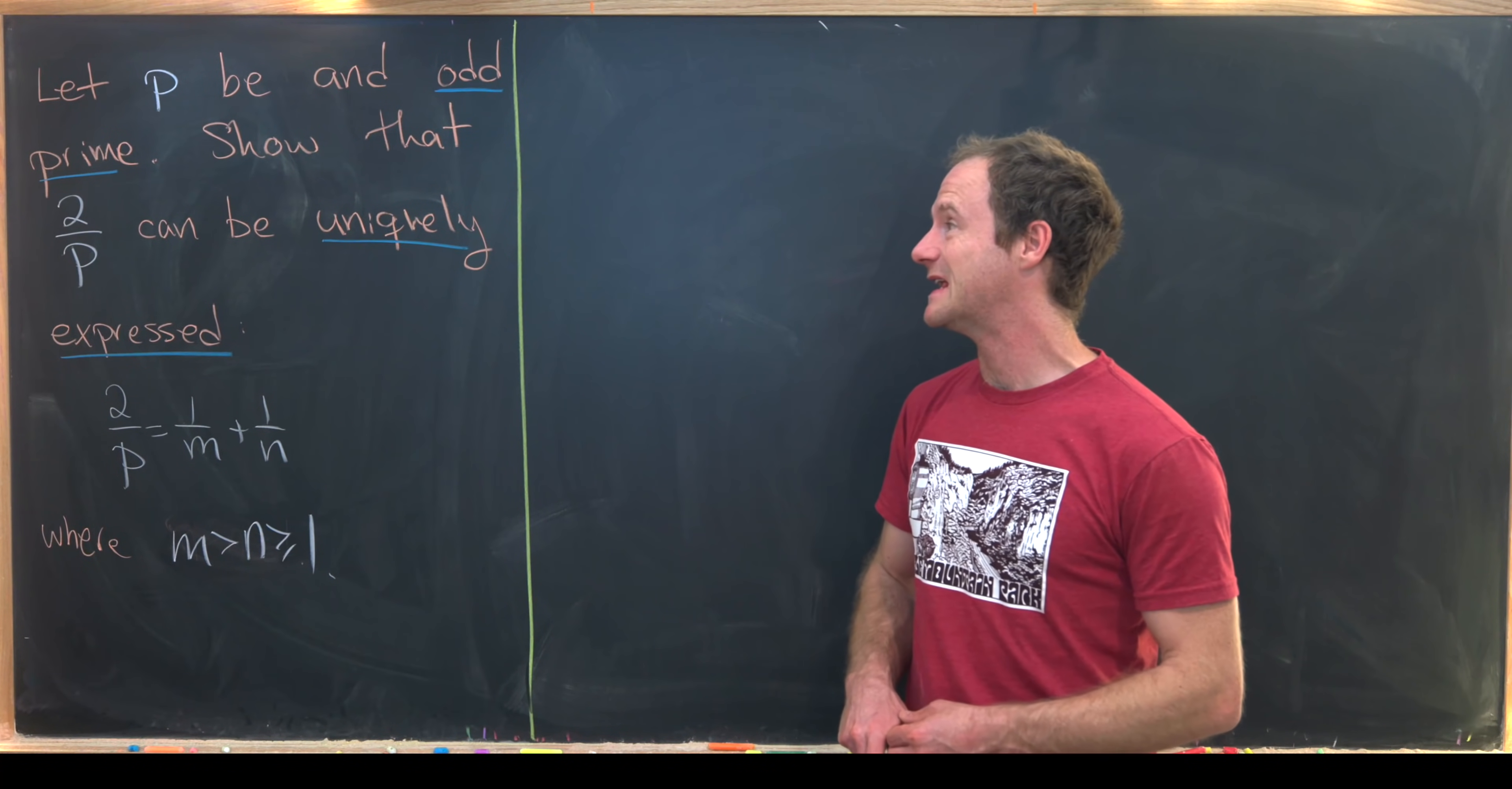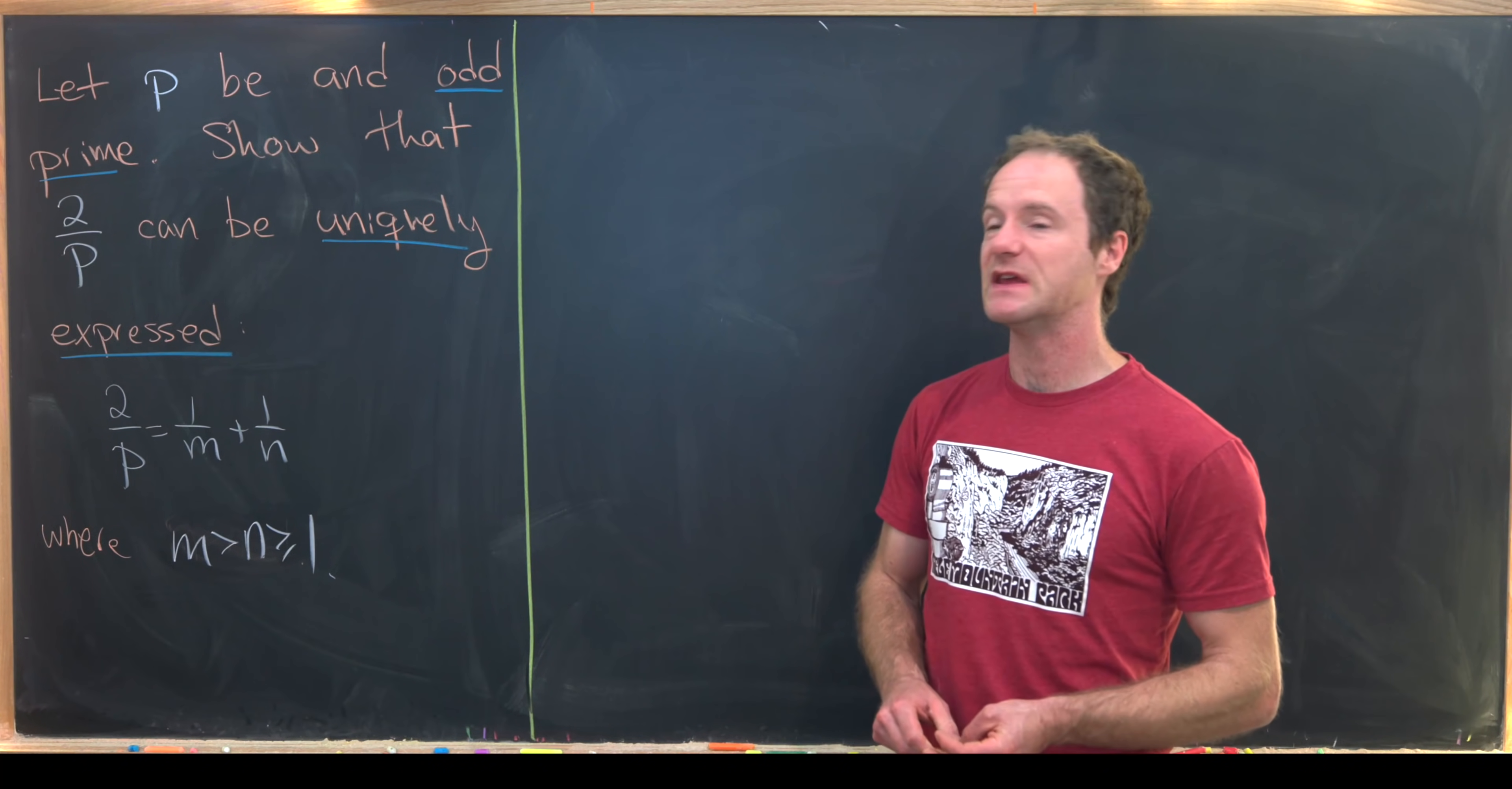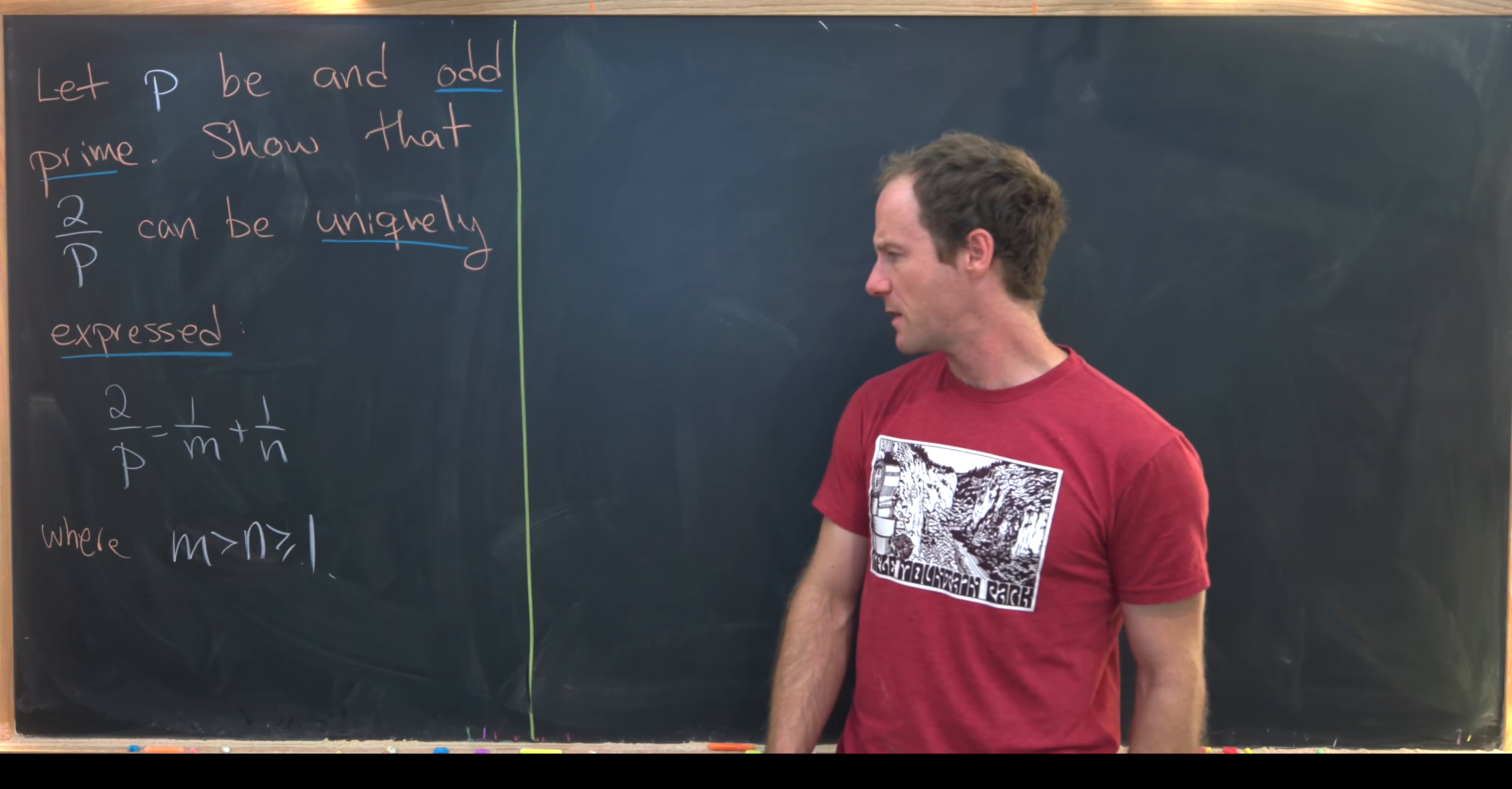We want to suppose that P is an odd prime, so that means it's any prime except for the number 2. Our goal is to show that 2/P can be uniquely expressed in the form 1/M + 1/N where M is bigger than N which is bigger than or equal to 1. Okay, so let's maybe get to it.